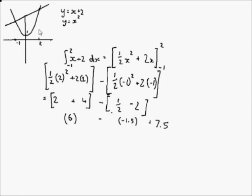So the area under y equals x plus 2 with upper limit of 2 and lower limit of minus 1 is equal to 7.5.